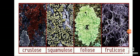Foliose Lichens are like twisted and crinkled leaves — 'folio' means leaf — examples are Parmelia and Physica. Fruticose Lichens are branched and erect with a bushy appearance — examples are Evernea, Ramalina, and Usnea.